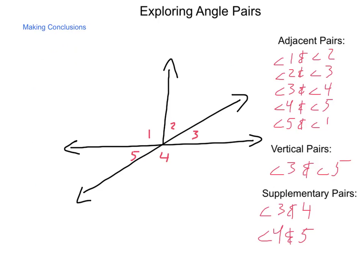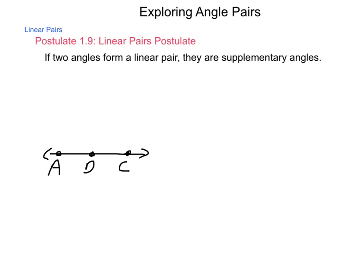Now, from these angle pairs, we do come up with a new postulate, and that is postulate 1-9. Postulate 1-9, the linear pairs postulate, states that if two angles form a linear pair, they are supplementary angles.